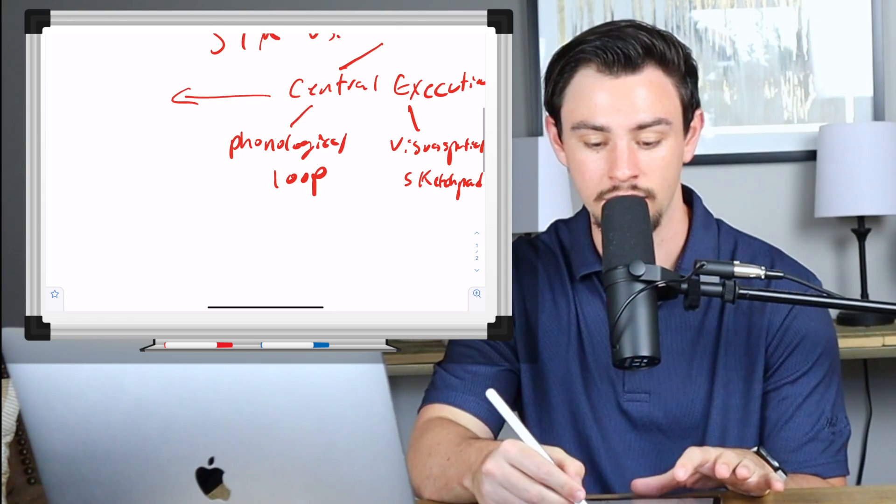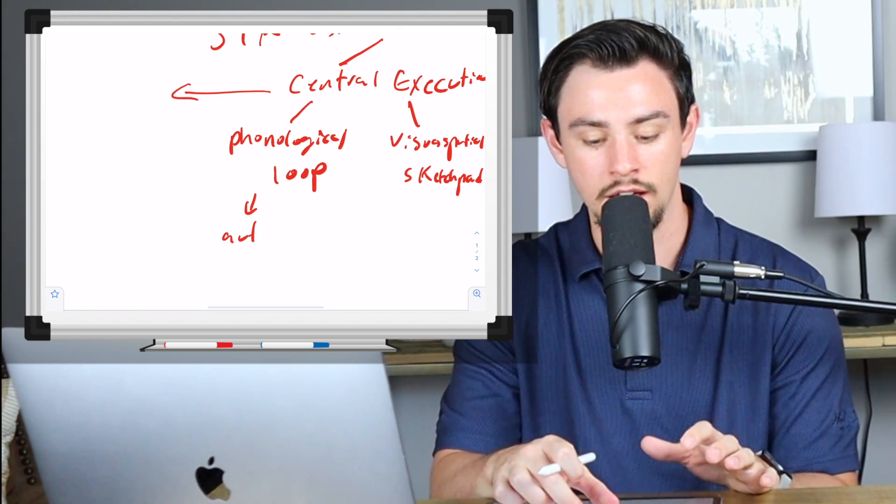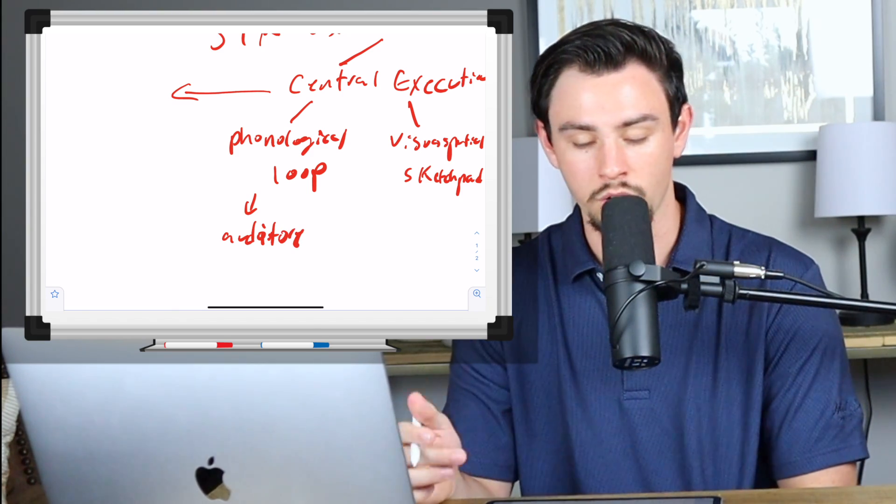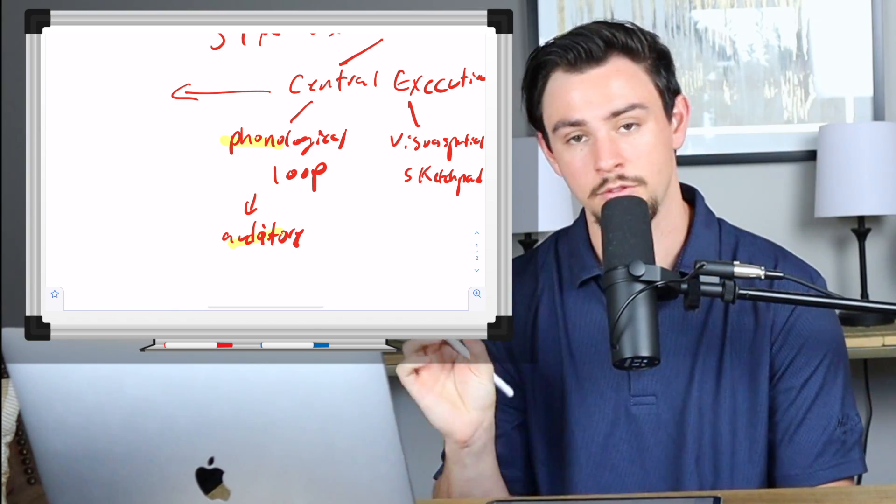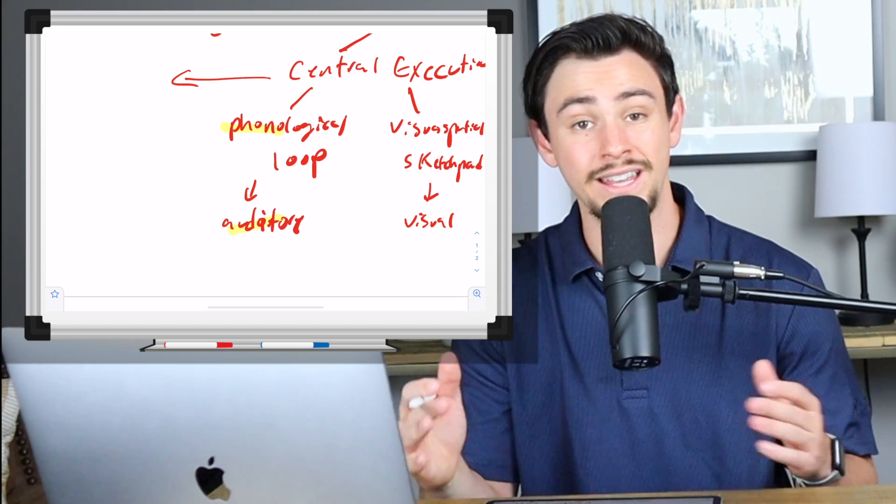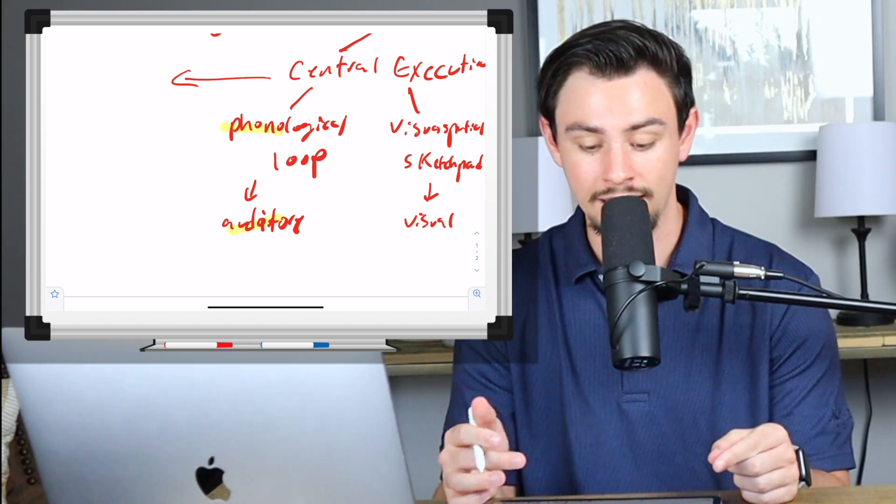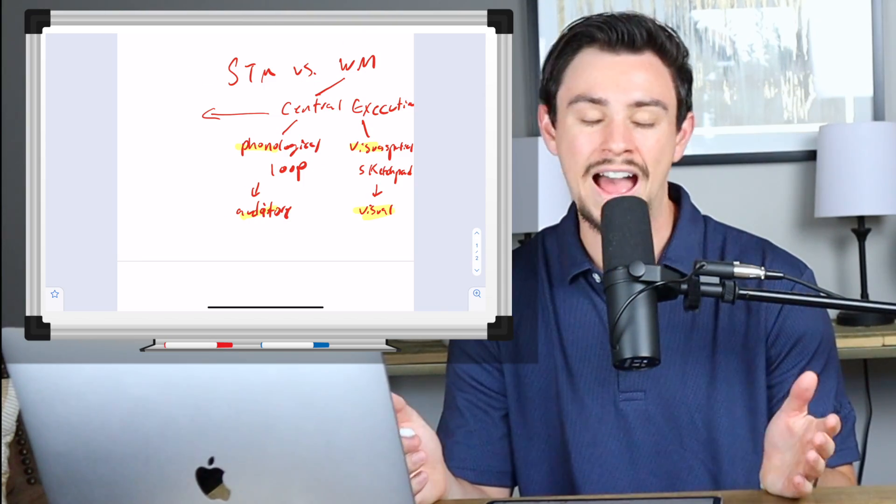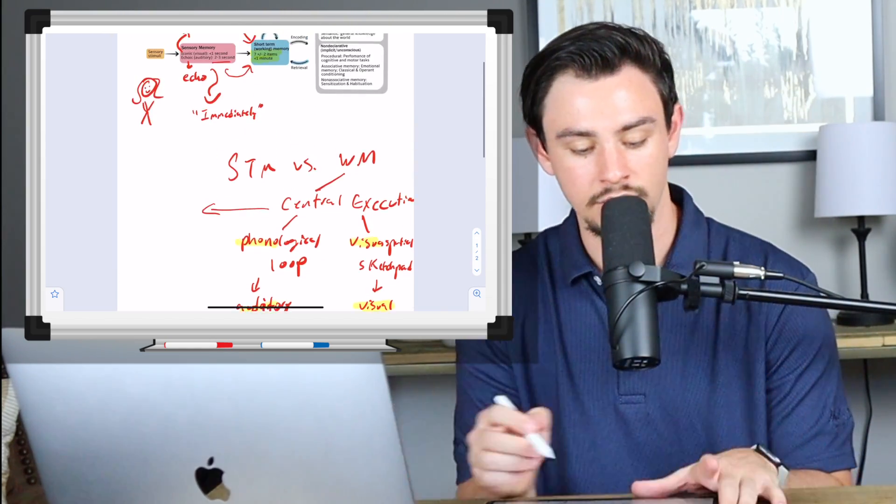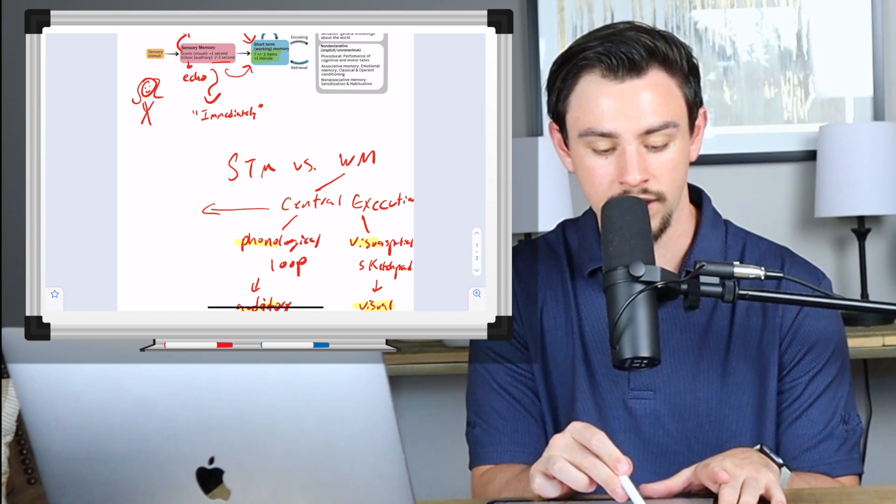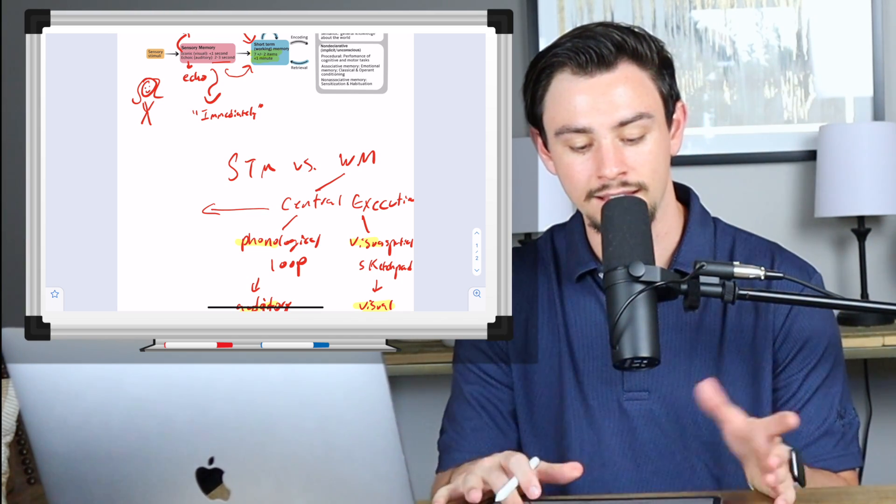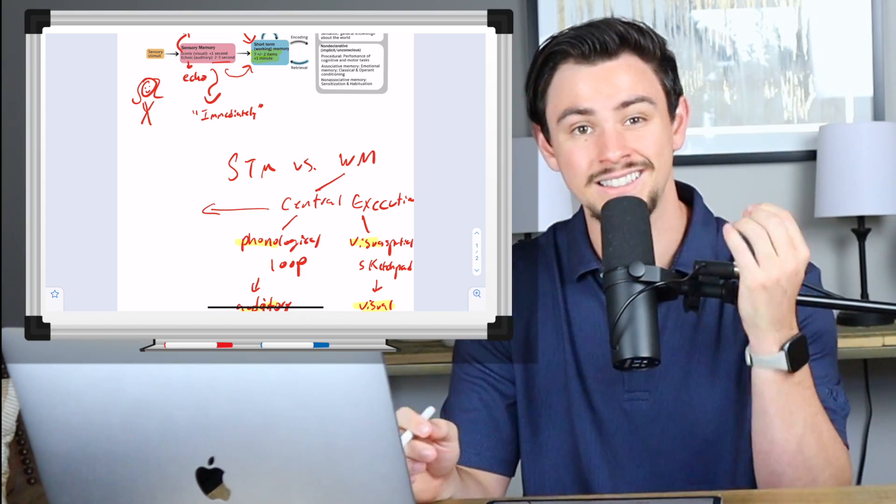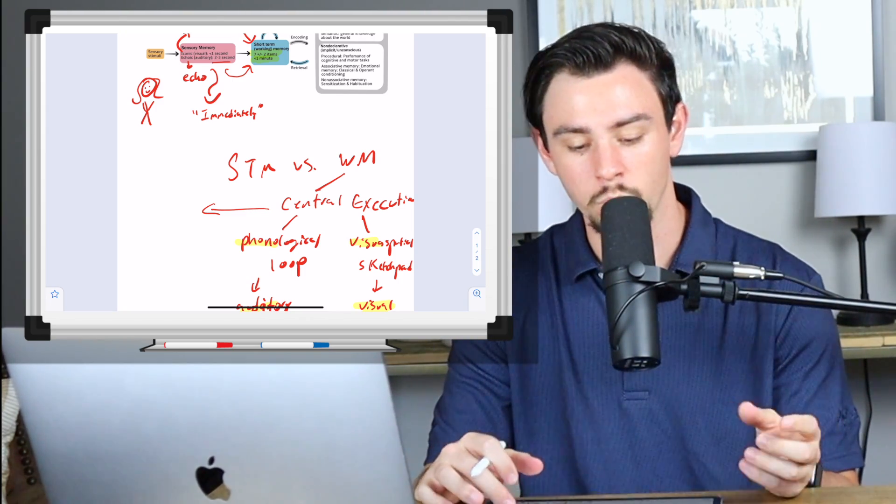So for example, let's say that you get a question that says that you remembered a noise for 30 seconds, which type of memory is allowing you to do that? Well, in the answer choices, they're going to have echoic and they're going to have the phonological loop. So you have to ask yourself, okay, well, how long did they say it was? And they said it was 30 seconds. So that's greater than one second. So you can cross out echoic and that leaves you with the phonological loop. So that's a way that they might actually test the concept of working memory.